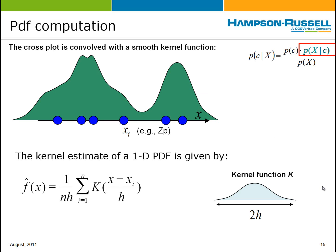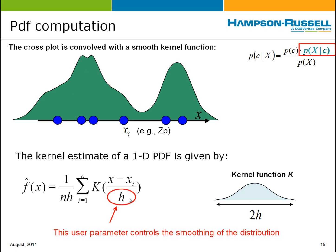To get the probability density function, we think of a convolution of a mathematical function with the cross-plot itself. To make things simple, consider a one-dimensional cross-plot dealing with one attribute, say Zp. The probability density function is a smooth curve that mimics and measures the density of points in the cross-plot — where there's a high density of points, we get a large value; where there's a low density of points, we get a low value. Mathematically, this is calculated by convolving a kernel — a function that looks something like a hill — whose width is set by the user parameter h. That h controls the smoothing of the distribution: a large value of h means wide, broad hills; a narrow value means narrow, sharp hills. To some extent, that's an arbitrary user parameter which has to be determined by trial and error.